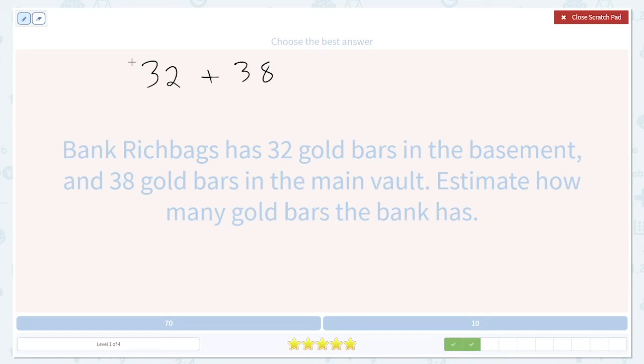32 because two is less than five rounds down to 30. And then 38 because eight is more than five rounds up to 40. So this gives a total of roughly 70 gold bars.